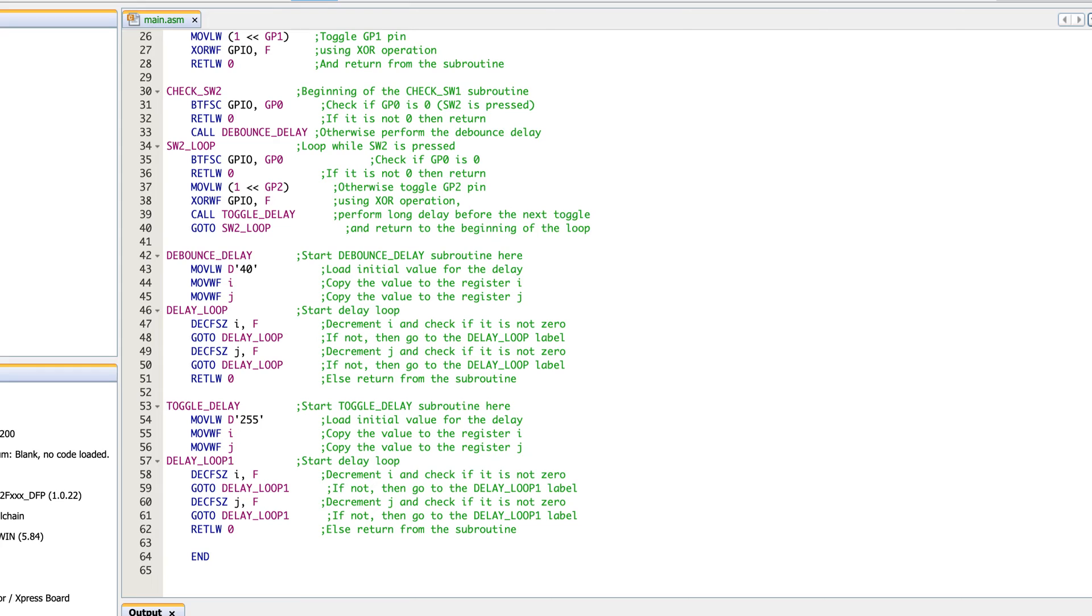The whole point of this debounce delay and debounce routine is making it so that when you push it, it's not just some stray signal, some change, but you actually pushed it and held it long enough for it to be certain that yes, this button is being pushed. Now even though it's called debounce delay, if you check lines 42 through 51, you'll notice that's just a typical delay loop. Literally all it's doing is saying, hey, it looks like it's been pushed. Let's wait a little bit of time and check to make sure that it is still pushed.